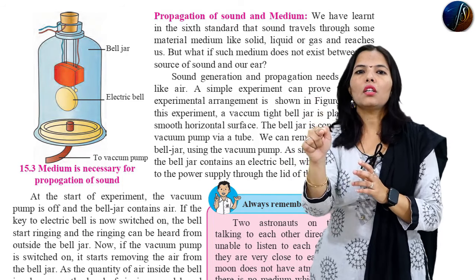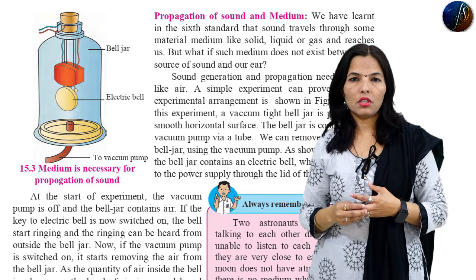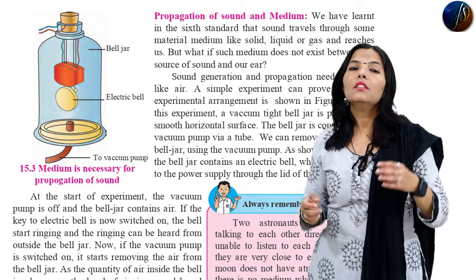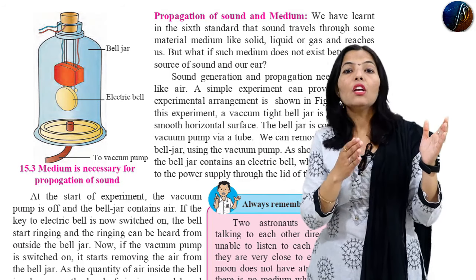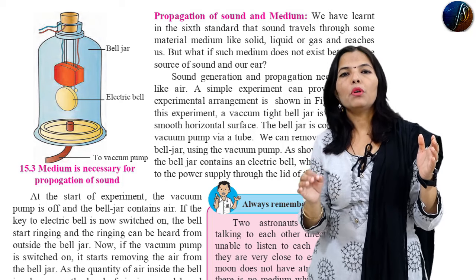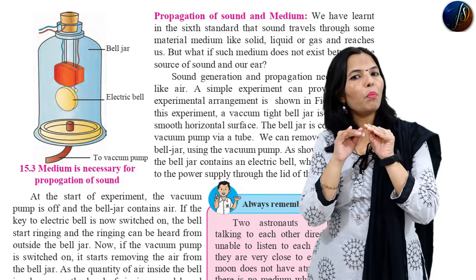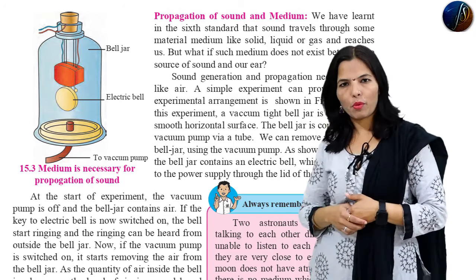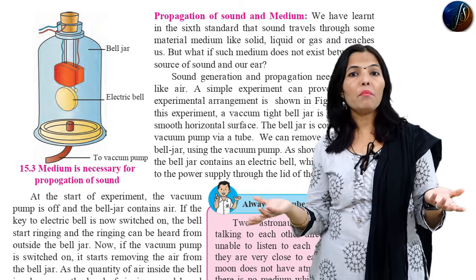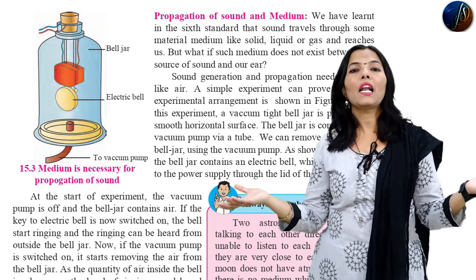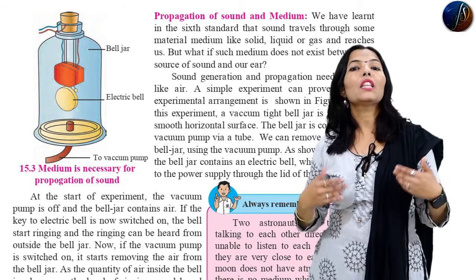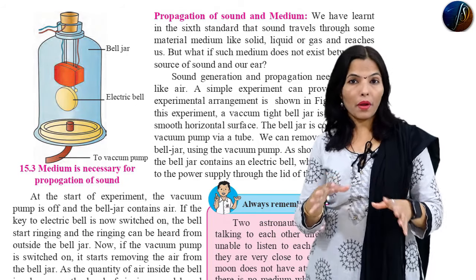When you switch on the bell, you can hear it ringing. But when the vacuum pump is switched on and air is removed, the sound of the bell becomes lower and lower. The frequency and intensity get lower and lower until the bell sound finally stops. The experiment makes clear that air is necessary for propagation of sound.